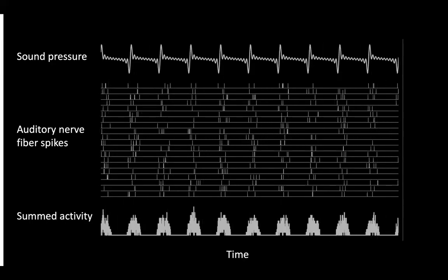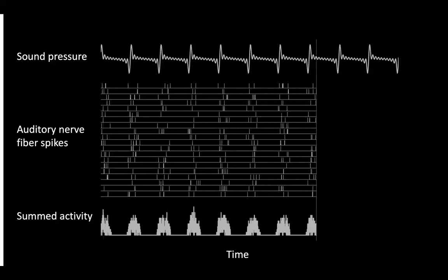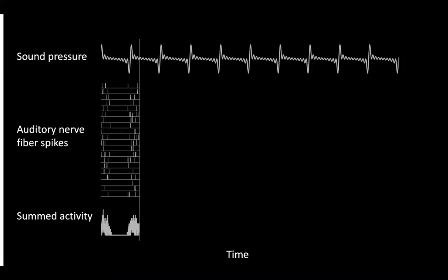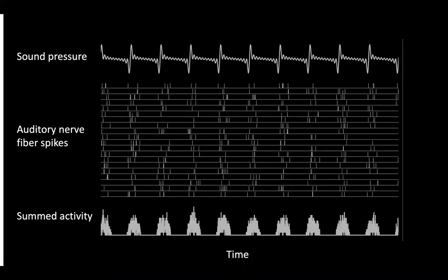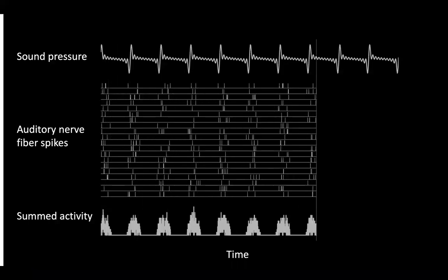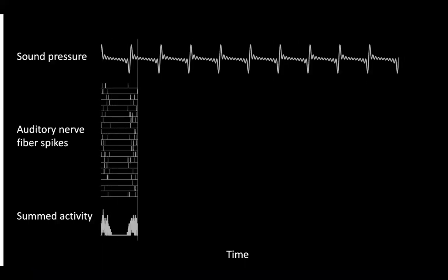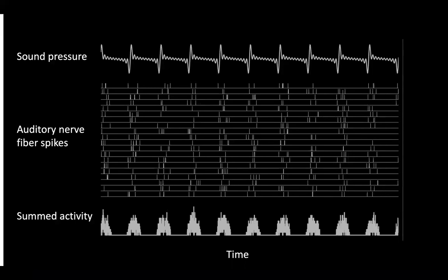Neurons can code information in the timing of their spikes in addition to their firing rates. The fidelity of spike timing is arguably greatest in the auditory nerve whose action potentials are phase locked to the fine-grained temporal structure of sound. But the role of this exquisite temporal coding in hearing remains controversial.